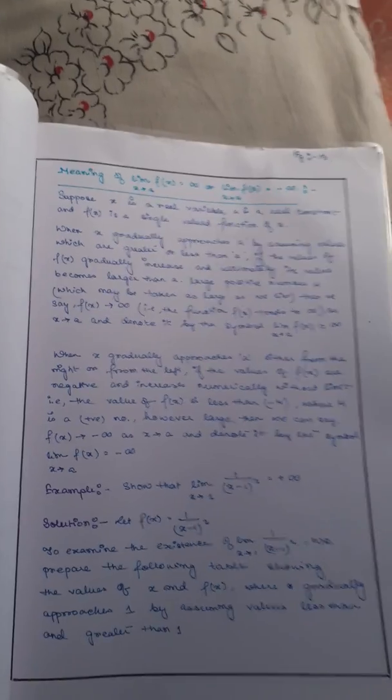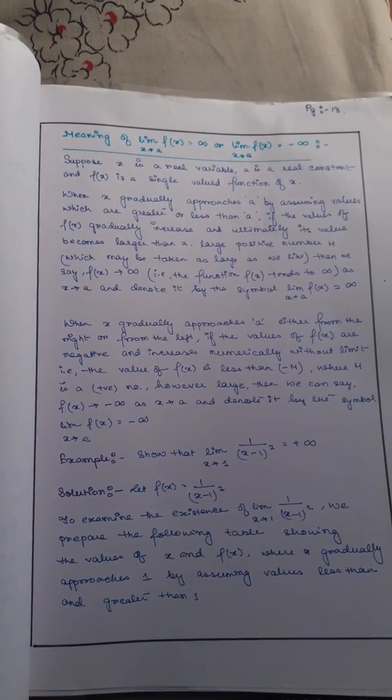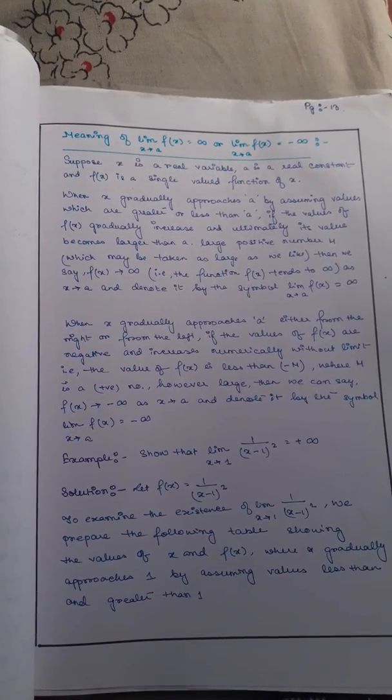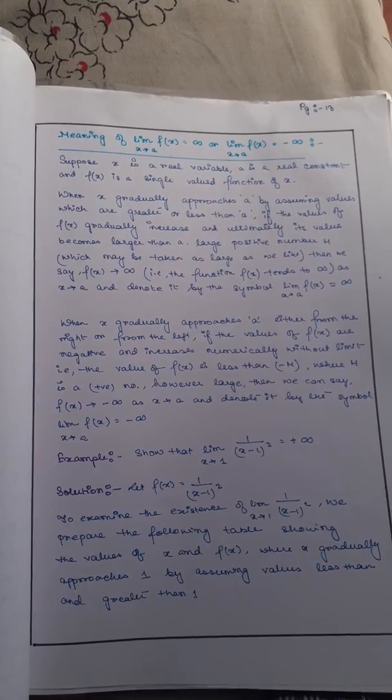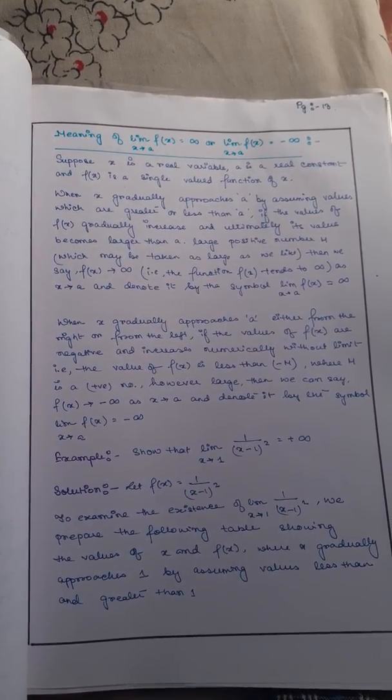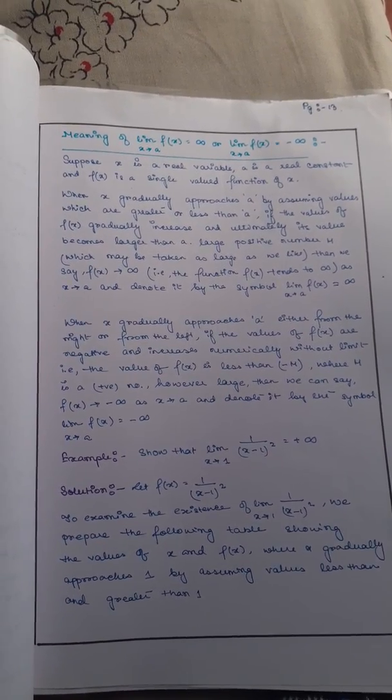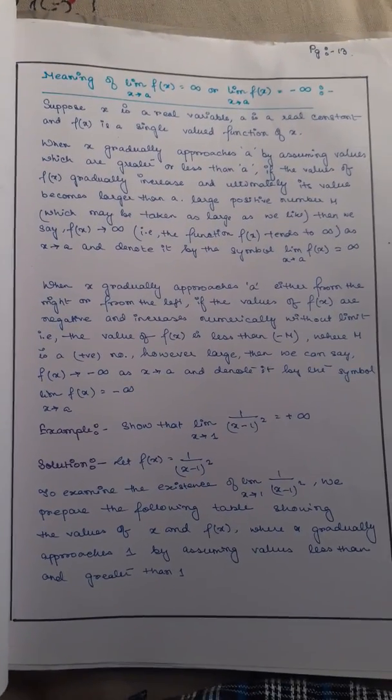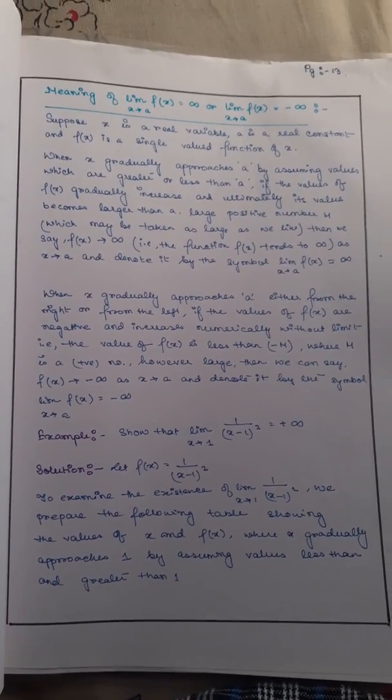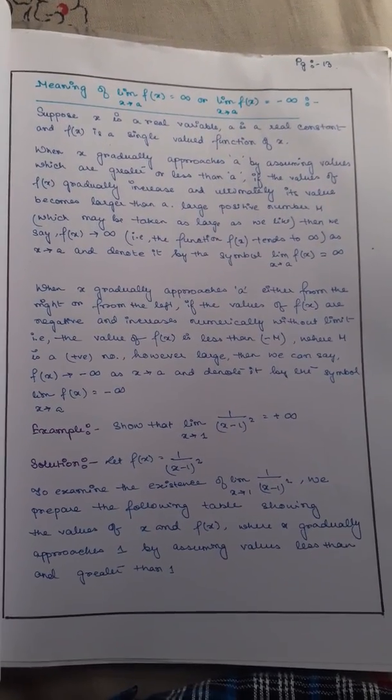Now I have explained the meaning of limit x tends to a f(x) equal to infinity, or limit of f(x) when x tends to a equal to minus infinity. So here you can see I have explained it with example and solution also.